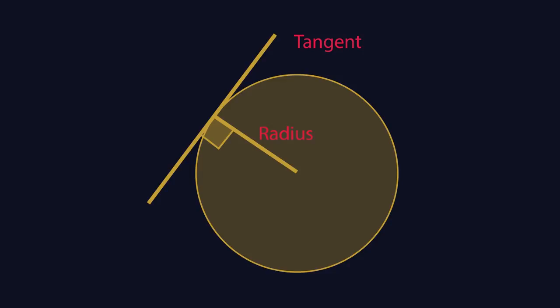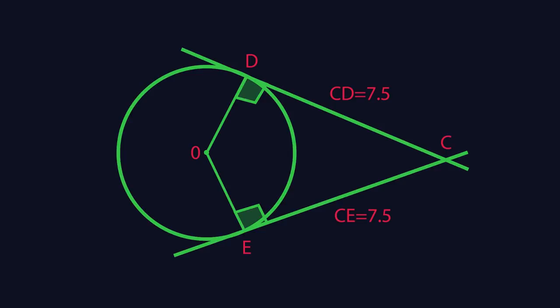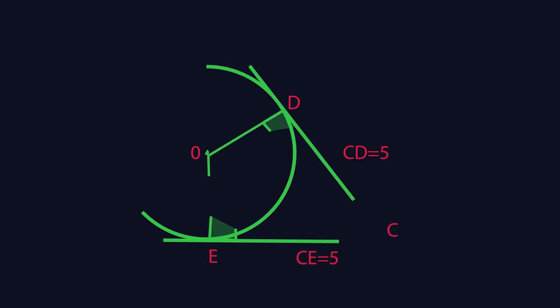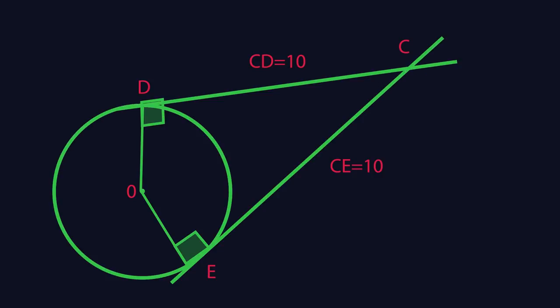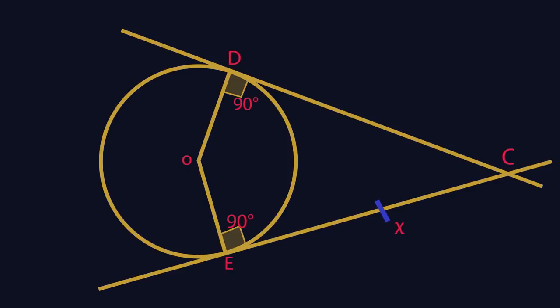What do you notice about the lengths of the tangents? The lengths of two tangents from a point to a circle are equal. This is useful to bear in mind as it means you have two identical triangles.